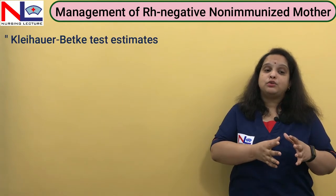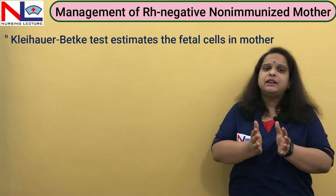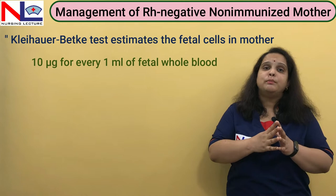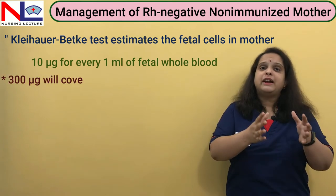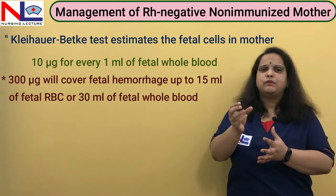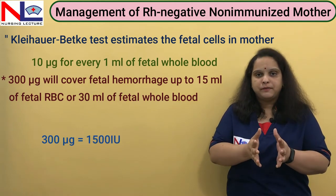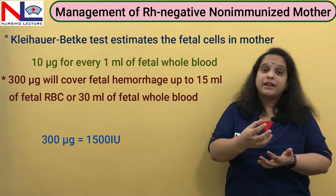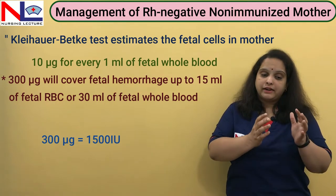The test used to quantify the amount of fetomaternal bleeding is the Kleihauer-Betke (KB) test. It is considered that for 1 ml of fetomaternal bleeding, 10 micrograms of anti-D is sufficient. A 300 microgram dose of anti-D provides protection against 30 ml of whole fetal blood, equivalent to 15 ml of fetal RBCs, and 300 micrograms equals 1500 international units. If fetomaternal bleeding is more than expected, the KB test quantifies the amount and the dose is adjusted accordingly.